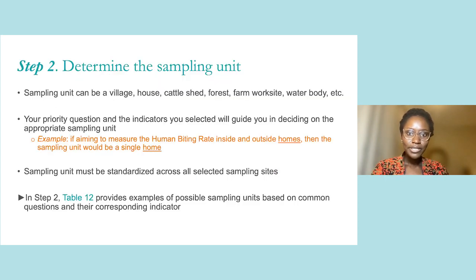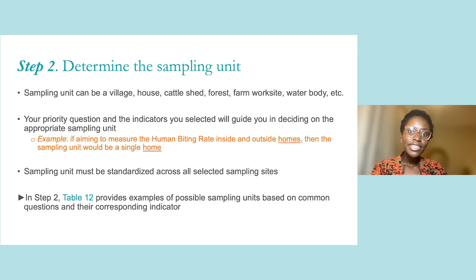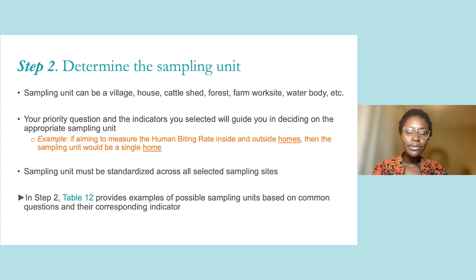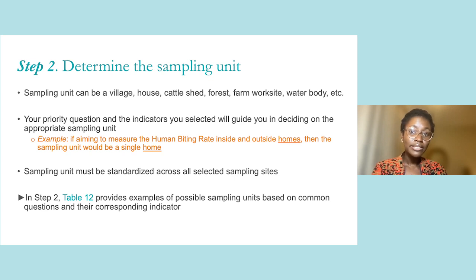In Step 2, you determine what the sampling unit will be. A sampling unit can be a village, a house, a cattle shed, a forest, a farm, a water body, etc. The indicators you selected will guide you in determining what sampling unit makes sense. For example, if you are trying to measure the human biting rate inside and outside homes, then your sampling unit will be one home. It is important that the sampling unit is standardized across all sites so that the data you collect is comparable.